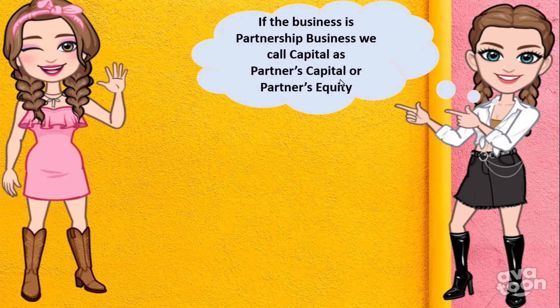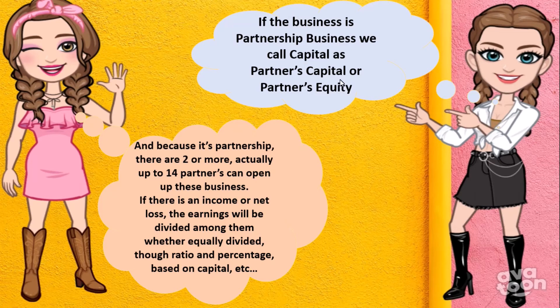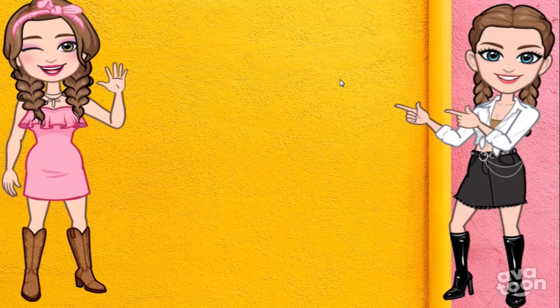If the business is a partnership, we call it capital, partner's capital, or partner's equity. Because it's a partnership, there are two or more — actually up to 14 — partners that can open this business. If there is income or a net loss, the earnings will be divided among them, whether equally divided, through ratio and percentage, based on capital, beginning or ending capital, and so on.